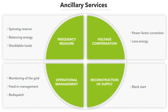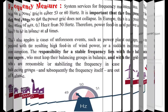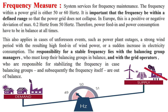Automatic Frequency Restoration Reserve (AFRR) is a type of reserve used to maintain the stability and reliability of the electricity grid. Unlike Manual Frequency Restoration Reserve (MFRR), which can be activated manually by dispatchers, AFRR is activated automatically in response to a disturbance on the grid.